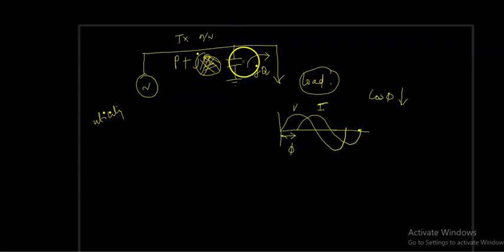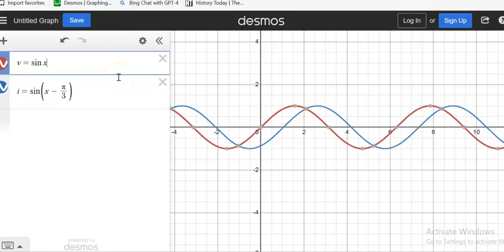I am going to explain this using waveforms. By changing the capacitance of this bank, we can improve the power factor of the system. Let's see.